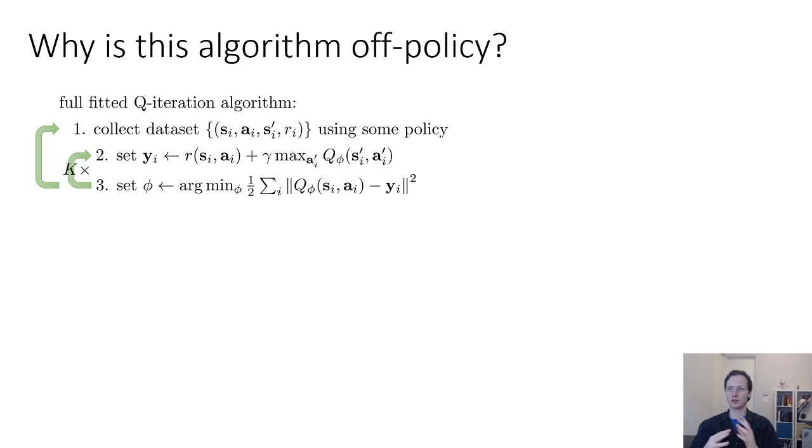So first, let's talk a little bit more about what it means for fitted Q iteration to be an off-policy algorithm. Just to remind everybody, off-policy means that you do not need samples from the latest policy in order to keep running your RL algorithm. Typically what that means is that you can take many gradient steps on the same set of samples or reuse samples from previous iterations. So you don't have to throw out your old samples, you can keep using them, which in practice gives you more data to train on.